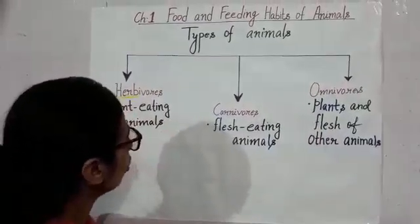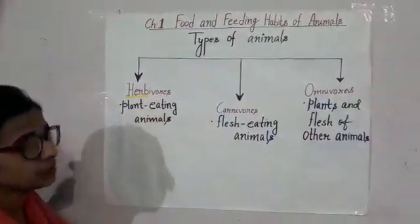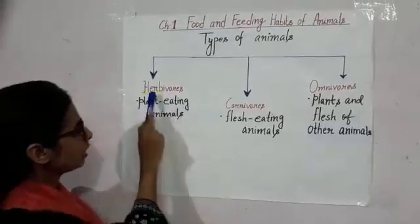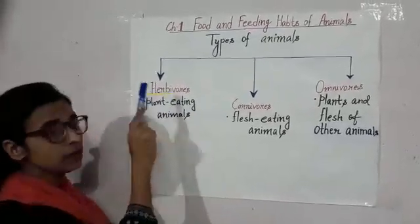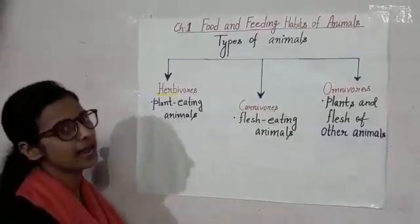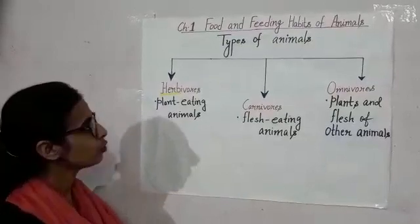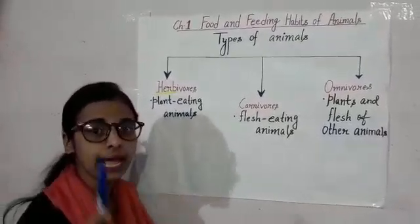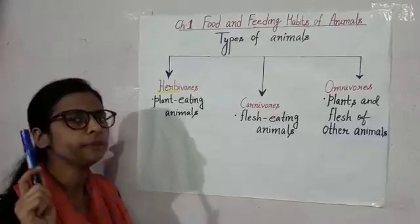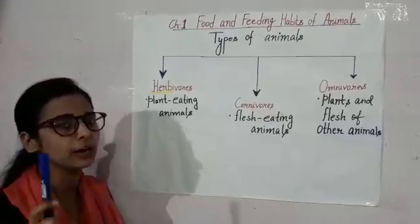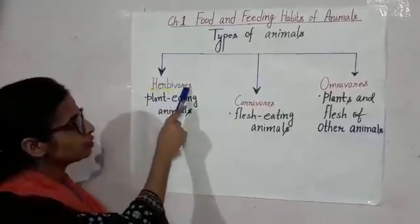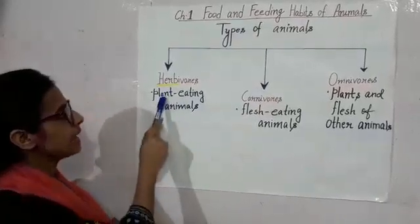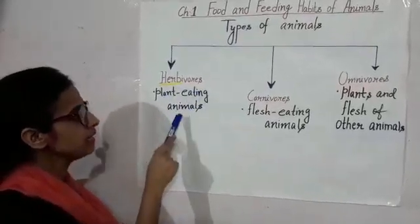We are going to discuss first about the herbivores. The word herb means plant. So from here we get the clue that the animals that eat only plants are called herbivores. The other name for herbivores is plant eating animals.